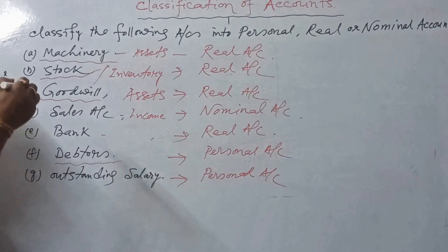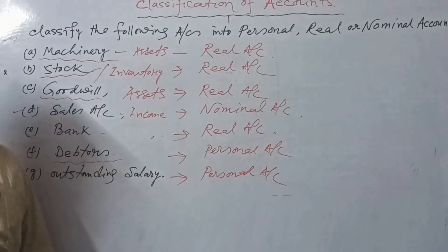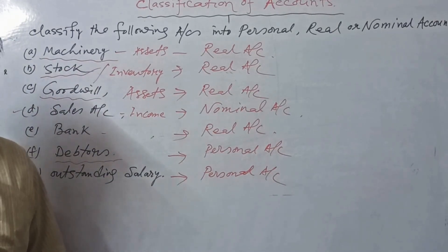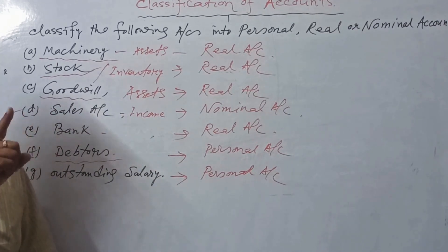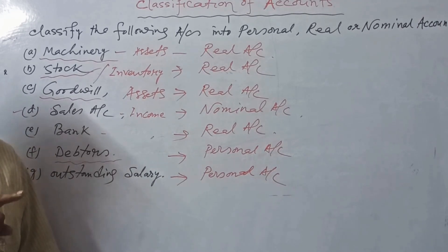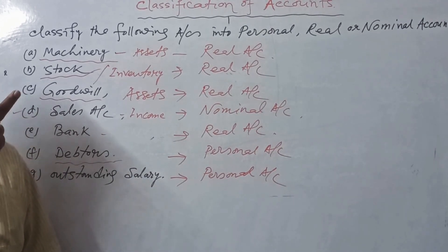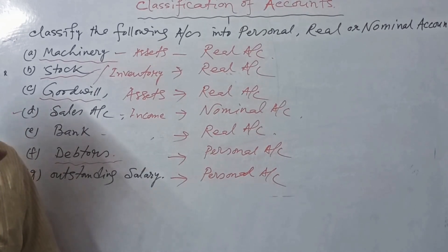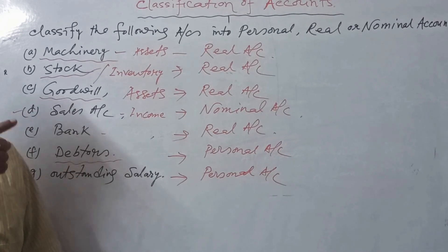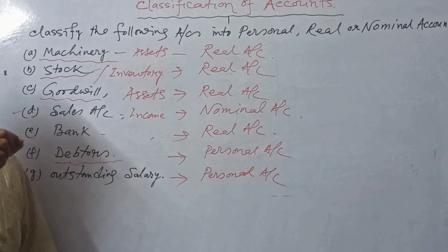In brief, the classification of accounts may be divided into two: personal account and impersonal account. Personal account has three types — artificial persons, natural persons, and representative personal account. The golden rule: receiver is debited, giver is credited. Impersonal accounts are divided into real account and nominal account. Real accounts are further divided into tangible and intangible. Golden rules: what comes in is debited, what goes out is credited.